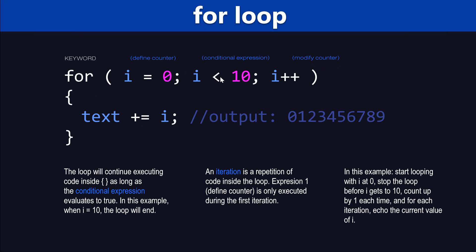So when i is less than 10, our loop will continue running, and when i is equal to 10, the loop will exit. We separate that with a semicolon, and here we have the modification of the counter — we increase the value of our initial counter by one.